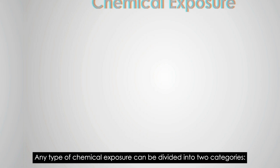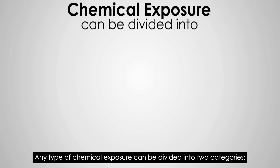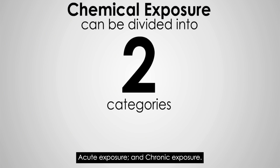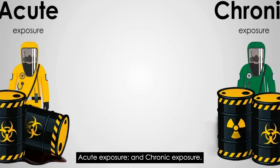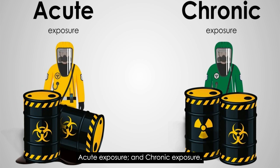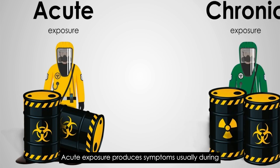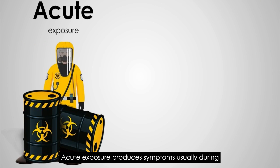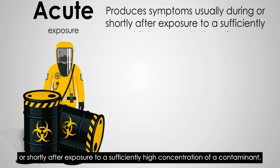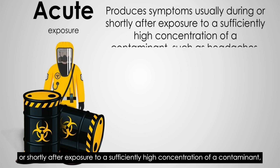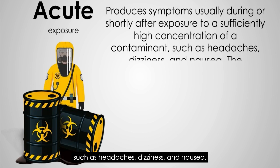Any type of chemical exposure can be divided into two categories: acute exposure and chronic exposure. Acute exposure produces symptoms usually during or shortly after exposure to a sufficiently high concentration of a contaminant, such as headaches, dizziness, and nausea.